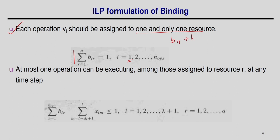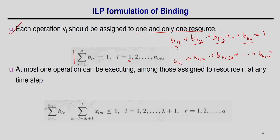For operation 1: B11+B12+...+B1A=1, meaning op1 maps to either resource 1, 2, 3, or A. For operation N: BN1+BN2+...+BNA=1, meaning op N maps to exactly one of resources 1 through A. At most one BIR will be 1 since the sum equals 1, ensuring each operation maps to only one FU.